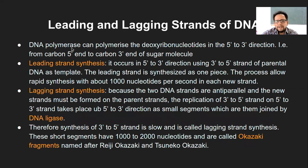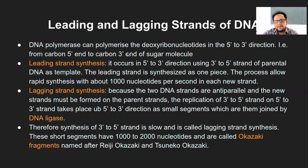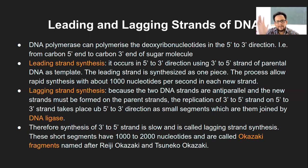DNA polymerase can polymerize the deoxyribonucleotides in the 5' to 3' direction — that is from the 5th carbon end to the 3rd carbon end of the sugar molecule. So the 5' end has a phosphate group and the 3' end has a hydroxyl group. That way, they will always keep adding the nucleotides to the 3' end, going from 5' on to 3' direction.